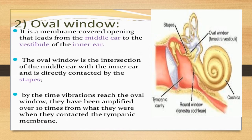The oval window is a membrane-covered opening that leads from the middle ear to the vestibule of the inner ear. It is directly in contact with the stapes. By the time vibrations reach the oval window, they have been amplified over 10 times compared to when they first contacted the tympanum membrane.